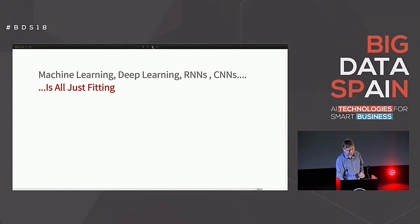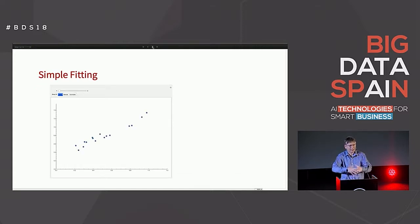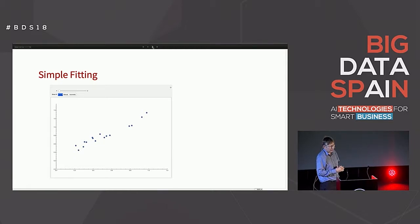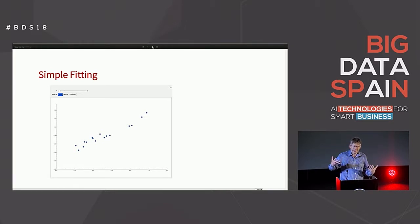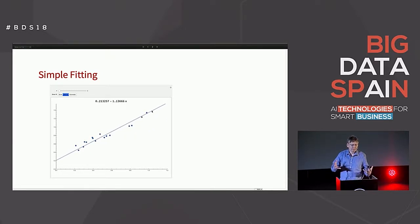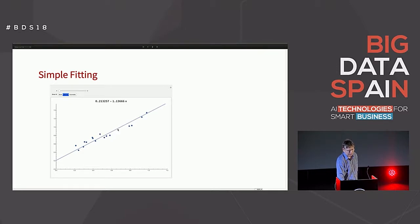So what do I mean by fitting? Here's the kind of thing you did in school. You had some data — maybe how far somebody seemed to have traveled over time. You had a model in your mind: we're going to make this a straight line. You got your ruler on the paper and drew a line that you thought was a good fit. The basic idea of the model is that you can then fill in the gaps and, to some extent, extrapolate as well.